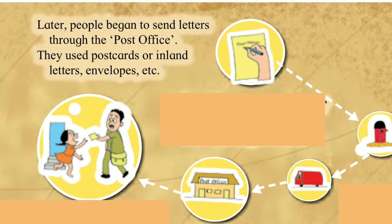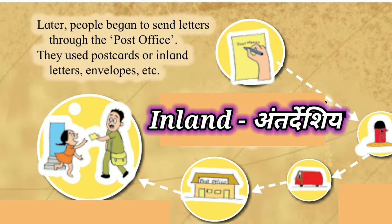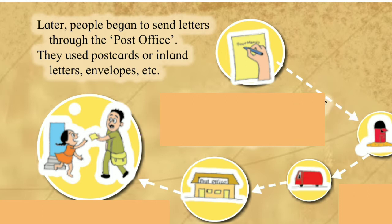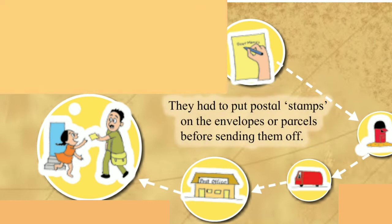Later, people began to send letters through the post office. Post office cha madhyam atun patra pathu lagle. They used postcards or inland letters and envelopes. Inland means antar deshiya. Envelopes means paakita. They had to put postal stamps on the envelopes or parcels before sending them off.